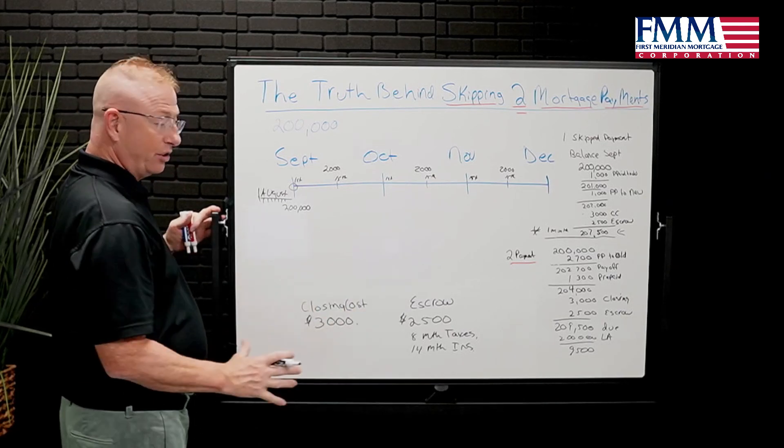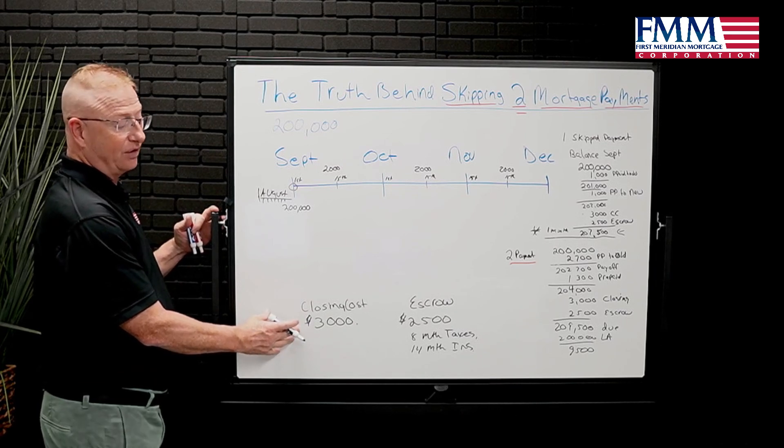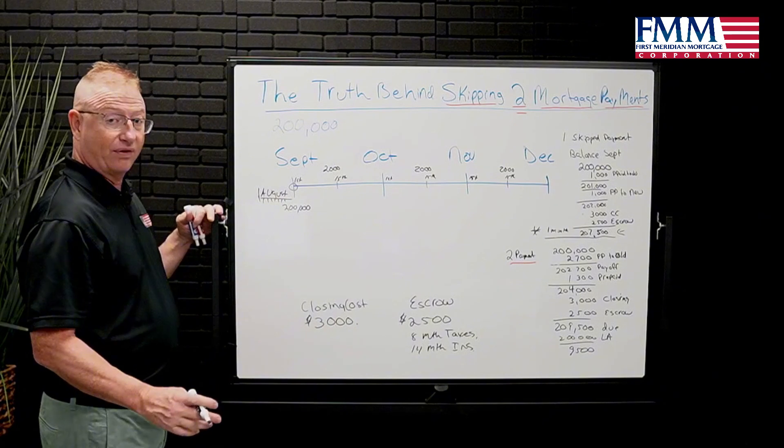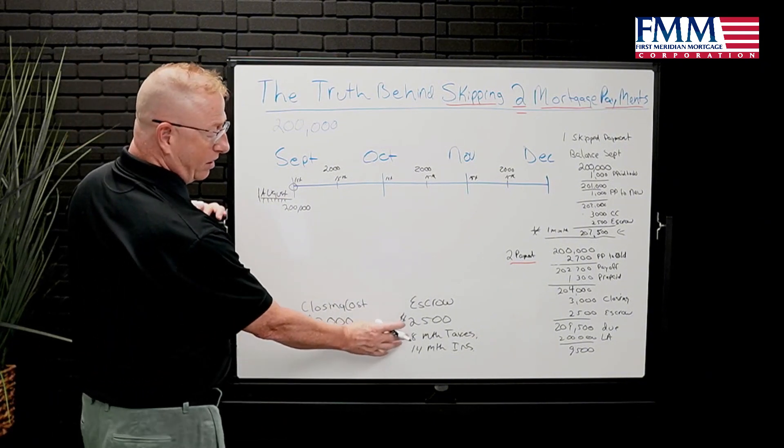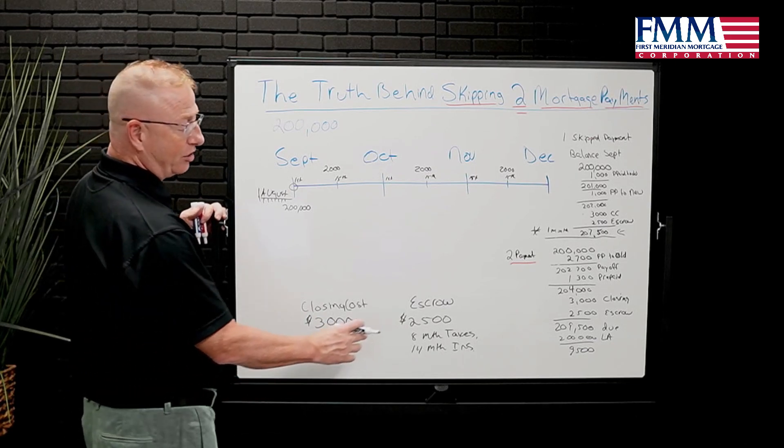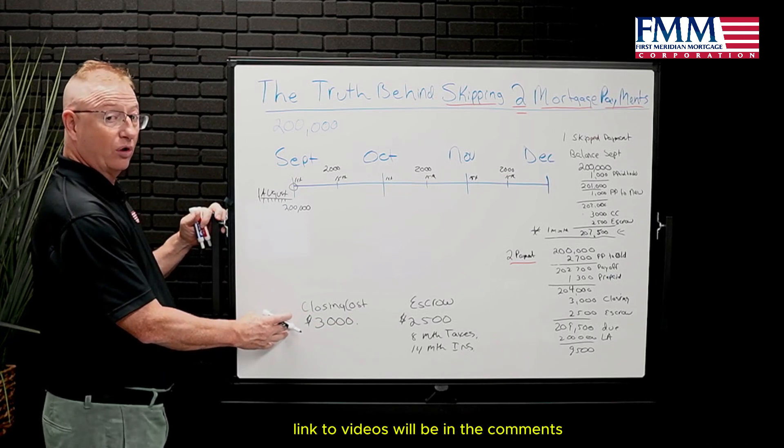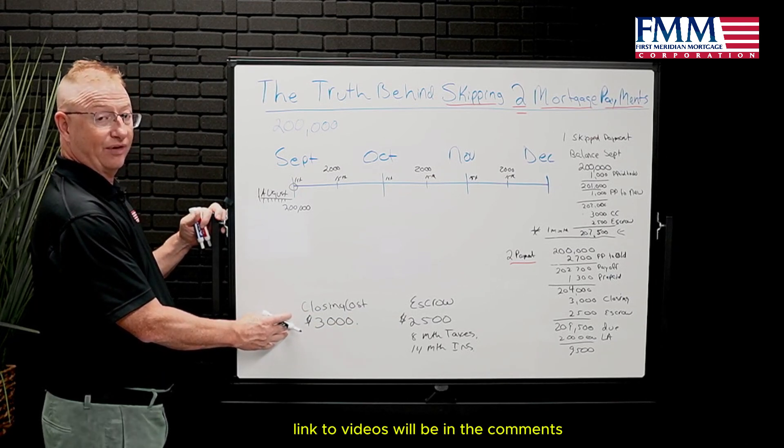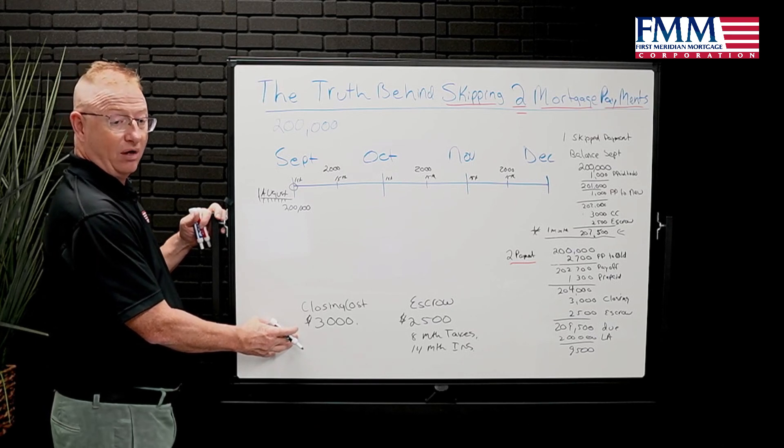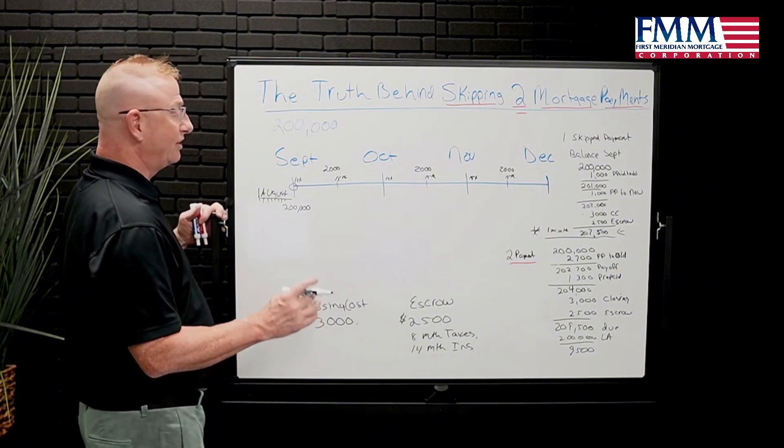We're also going to use in this example, closing costs on the refinance are $3,000, escrow startup is $2,500. If you want to check out the video on how escrows are calculated, check that out on YouTube. Also, there is a no closing cost refinance, how to actually get this closing cost paid for on your behalf, also on my channel.